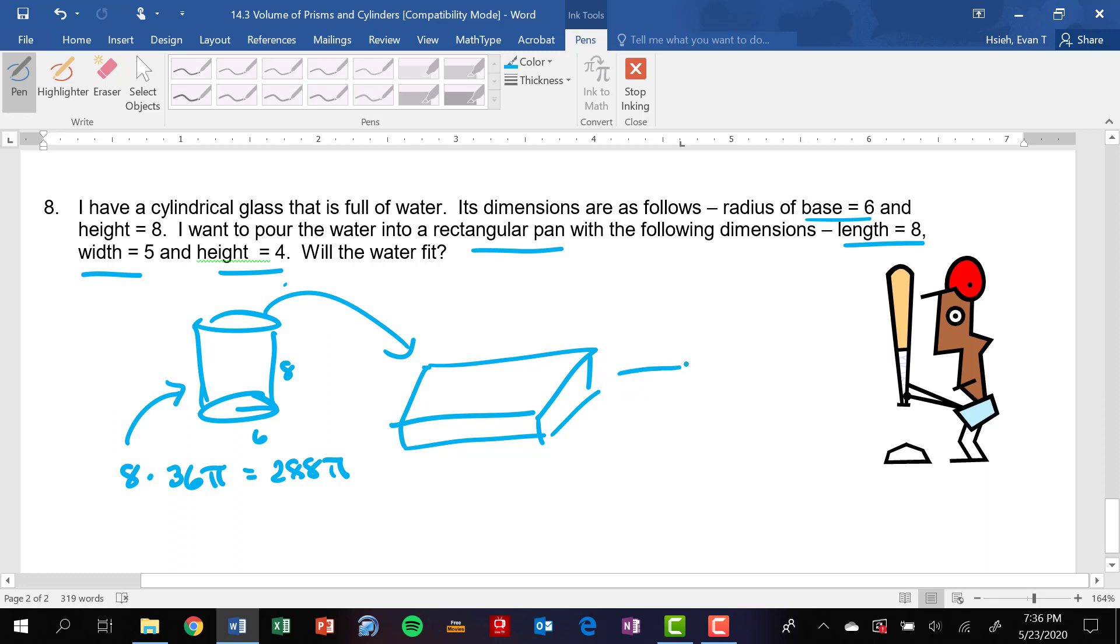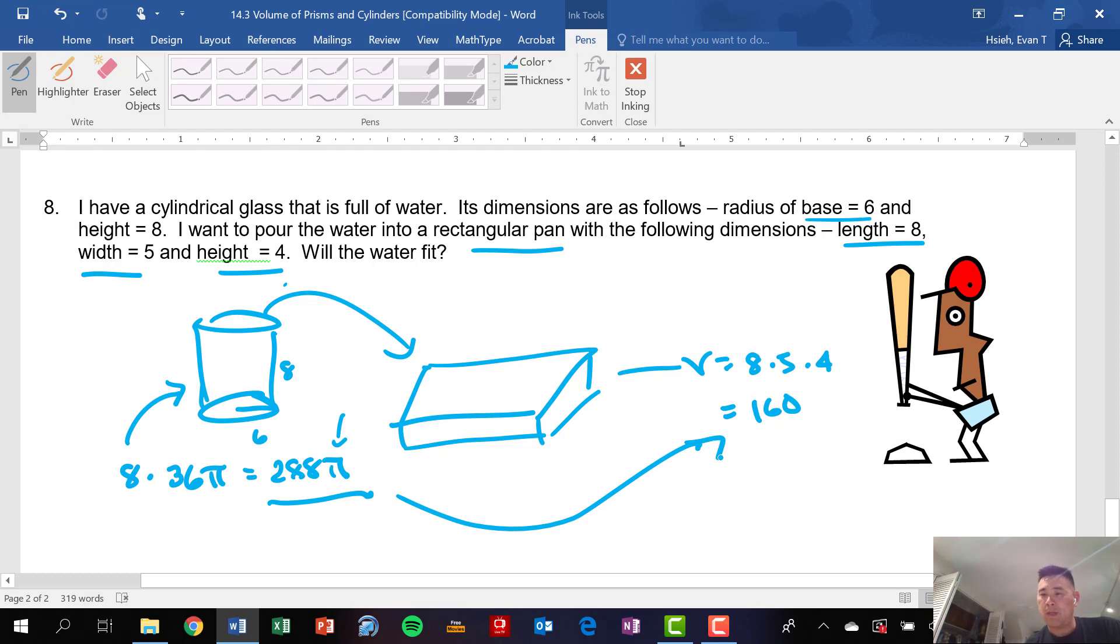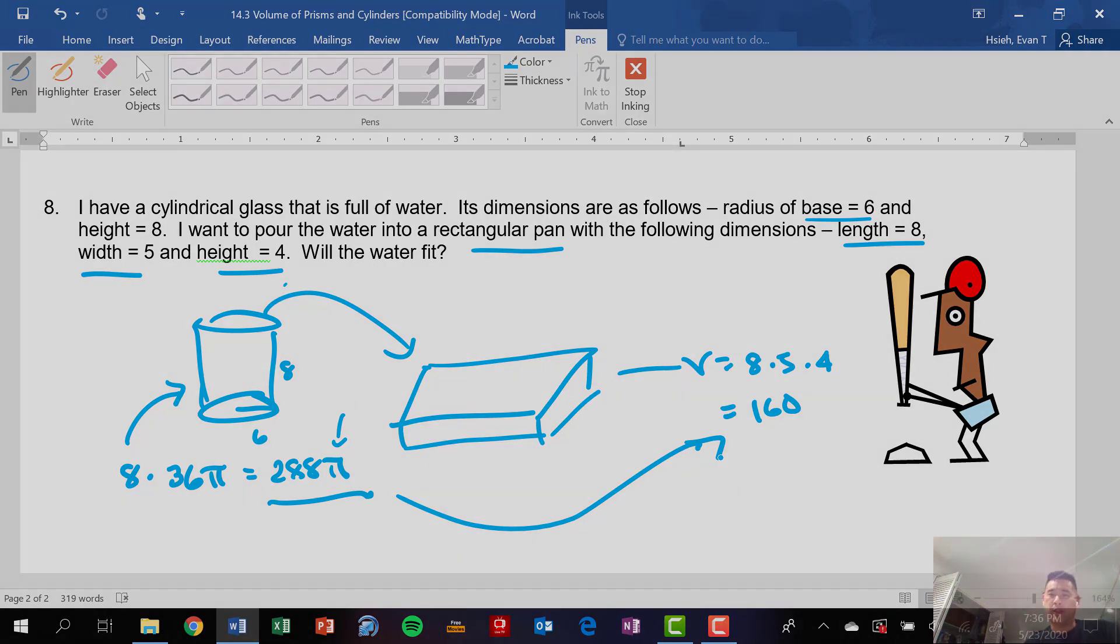And then the rectangular pan, the volume is just going to be length times the width times the height: eight times five times four, which is 20 times 8, so it's 160. And hopefully you can see right away that this is, pi is 3.14, there's no way that this is going to fit in this pan that has a volume of only 160. Okay, we'll stop here and let you give it a try. All right, good luck.